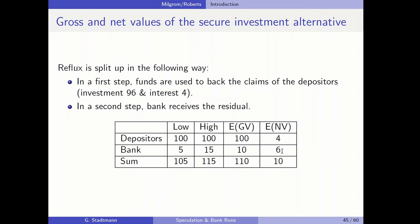The expected net value is 4 for the depositors: they invested 96 euros and will get back 100 euros, so 100 minus 96 equals 4. The expected net value for the bank is 6: they invested 4 units of equity and receive an expected gross value of 10, so 10 minus 4 equals 6. There is no risk for the depositors — they always receive their initial investment plus interest regardless of the state of nature. A very secure alternative.